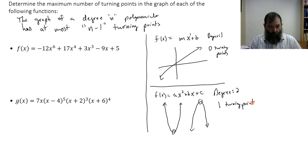So here we have the function -12x^6 + 17x^4 + 3x^3 - 9x + 5. This is a degree 6 polynomial.